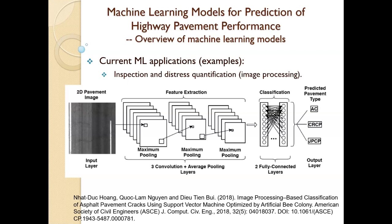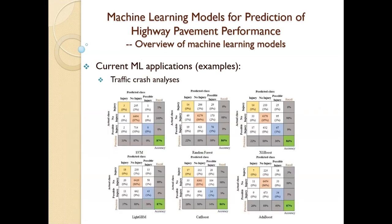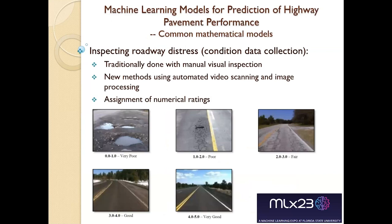We also inspect bridges using drones. They take high-resolution or even thermal pictures and process them to quantify defects. We use ML for safety as well — looking at where crashes happen on the roadway, modeling the severity of injuries using various ML techniques with very good results. Autonomous vehicles are also a very common application of ML in transportation.